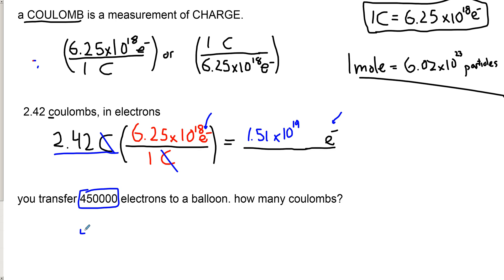450,000, which sounds like a lot. But remember, we need 6.25 times 10 to the 18 electrons to make one coulomb. You can also think about this like eggs and a dozen. So one dozen eggs is 12 eggs. How many dozens is one egg? That would be one twelfth.